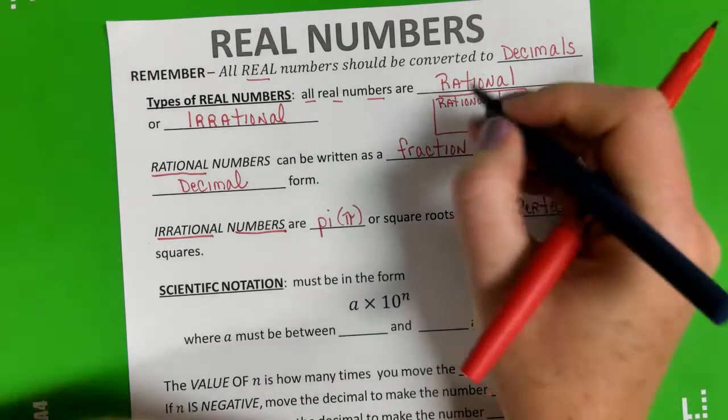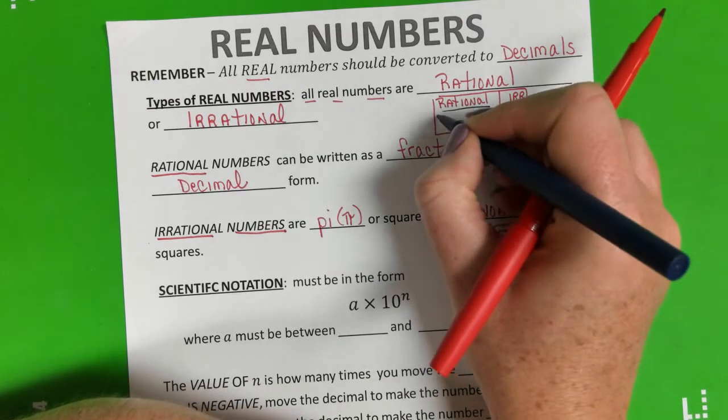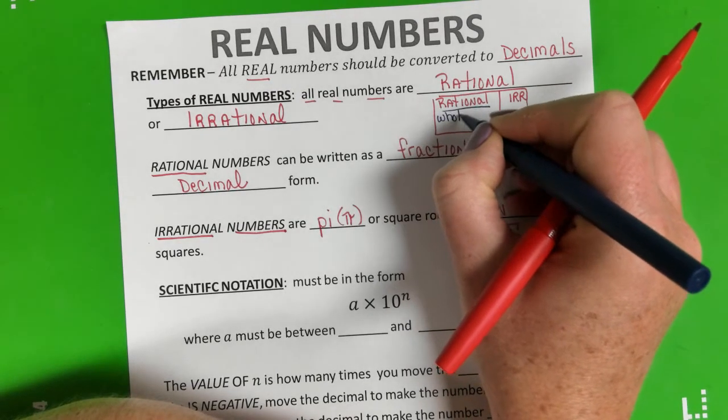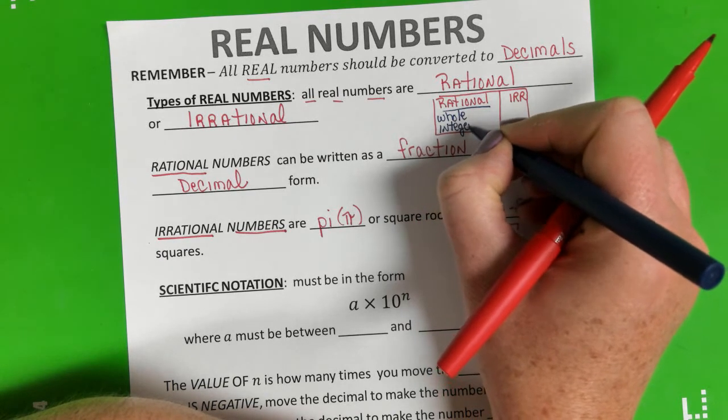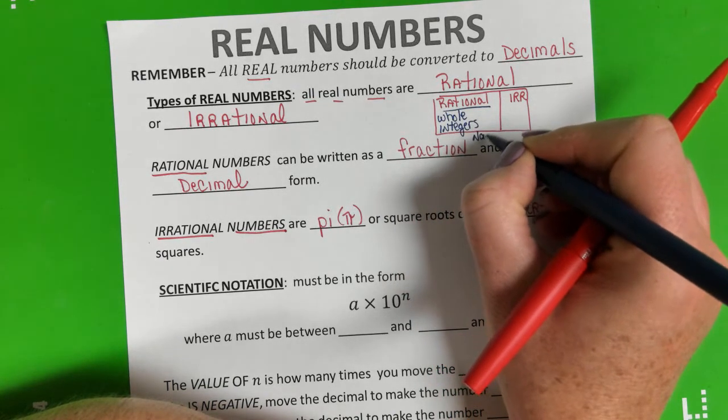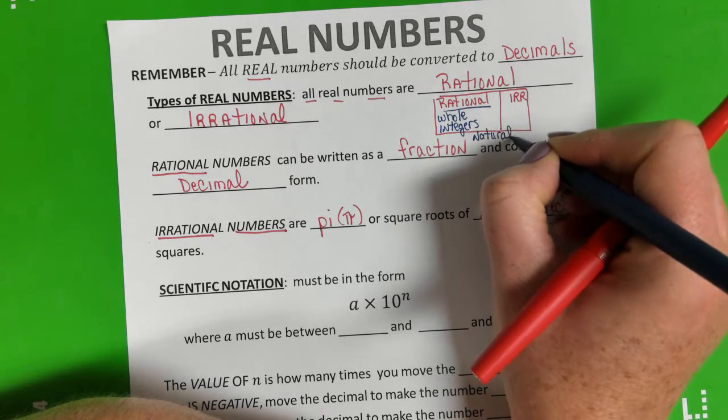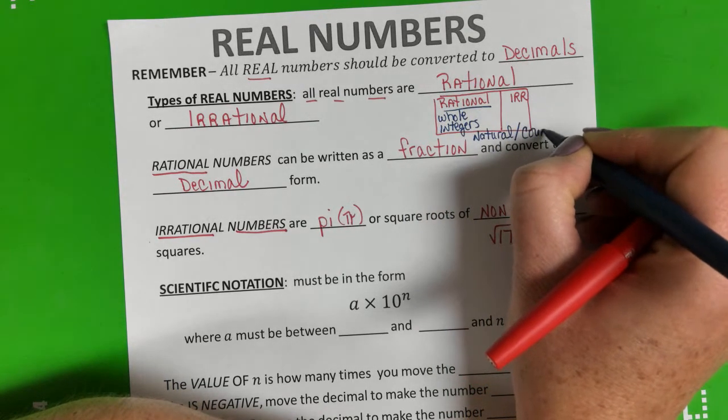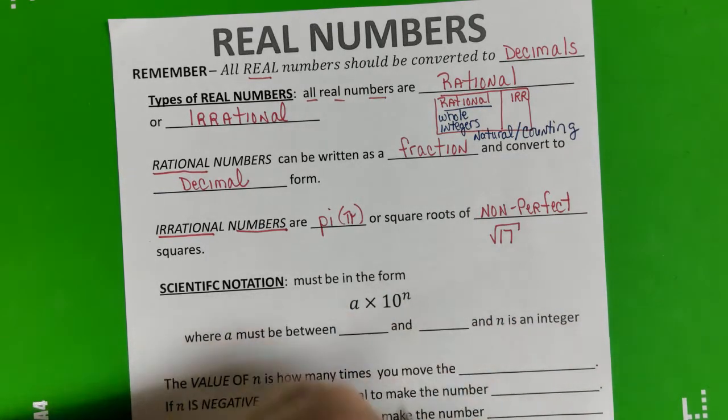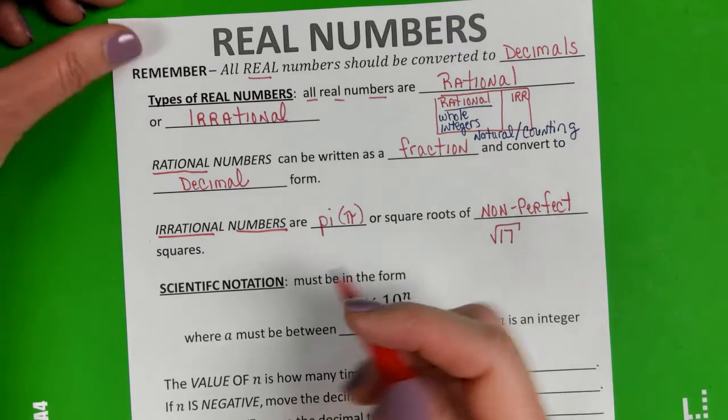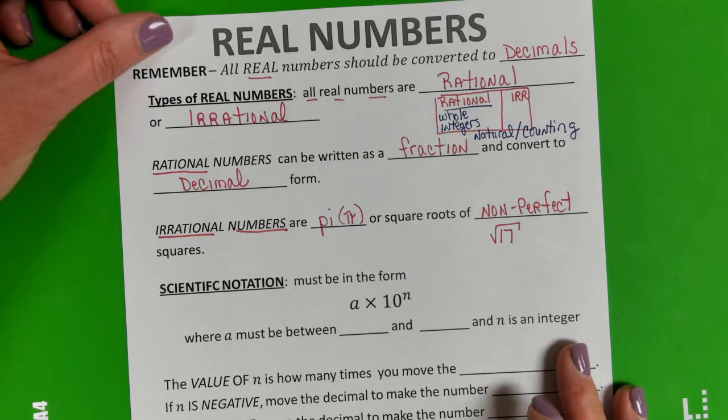I also want to add in that remember rational includes whole numbers, integers, and natural or counting numbers. Take a minute and write that down just to take note of it. You're not going to have a lot of questions on what type of number it is, but we are going to have a lot of questions on ordering our numbers.